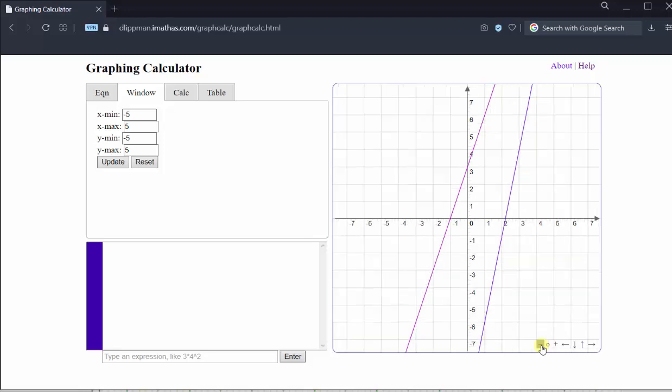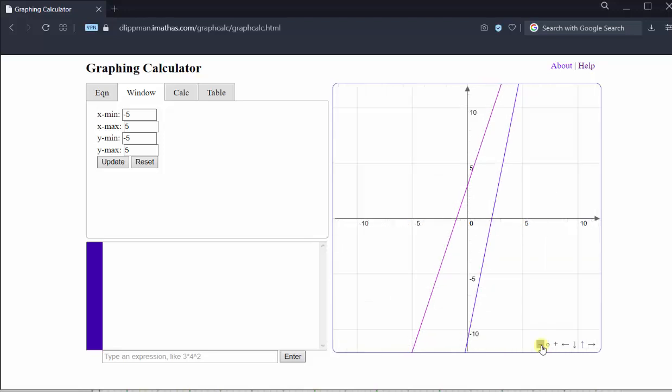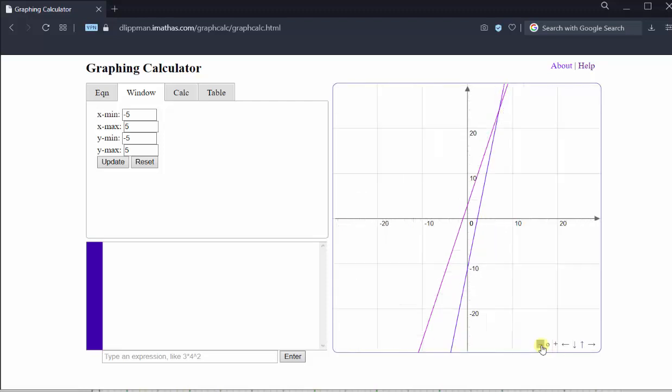If we zoom out enough, we should be able to determine the point of intersection in the first quadrant, which we now see here in quadrant one. So we could use this window and calculate the point of intersection.